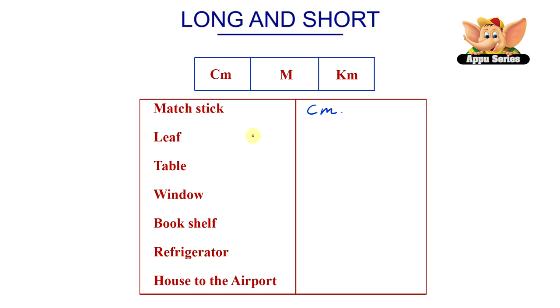Okay, the next one. Leaf. Centimeter. Table. And this goes over here to meter. Window. Goes to meter. And bookshelf. Also goes to meter.